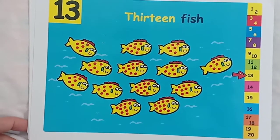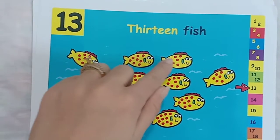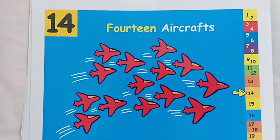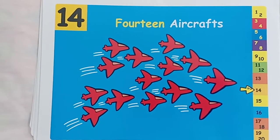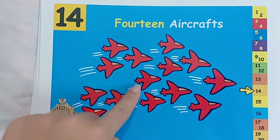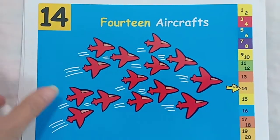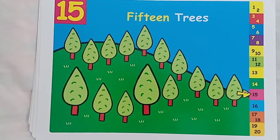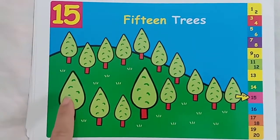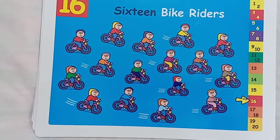How many fish? 1, 2, 3, 4, 5, 6, 7, 8, 9, 10, 11, 12, 13. How many fish? 1, 2, 3, 4, 5, 6, 7, 8, 9, 10, 11, 12, 13, 14. How many fish? 1, 2, 3, 4, 5, 6, 7, 8, 9, 10, 11, 12, 13, 14, 15. How many bike riders? 16.